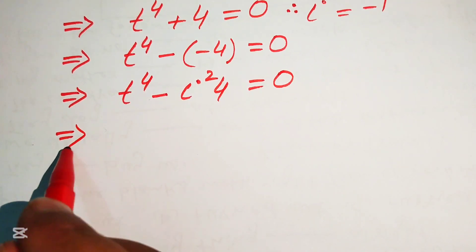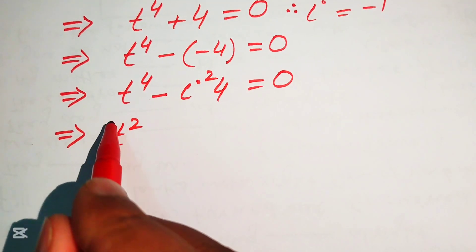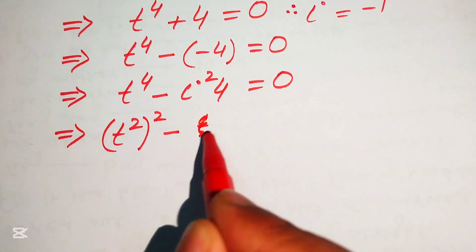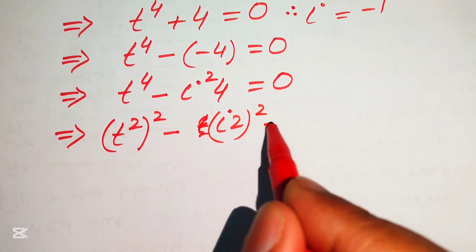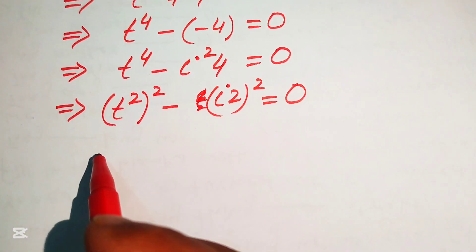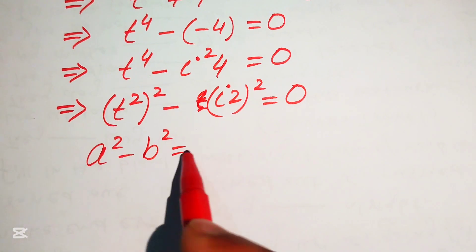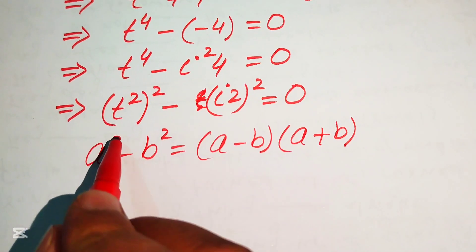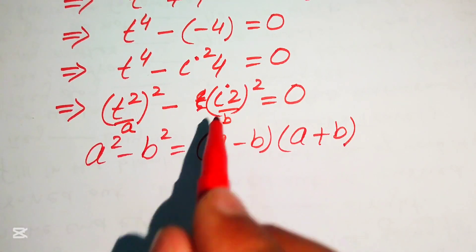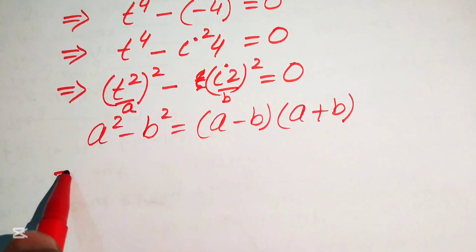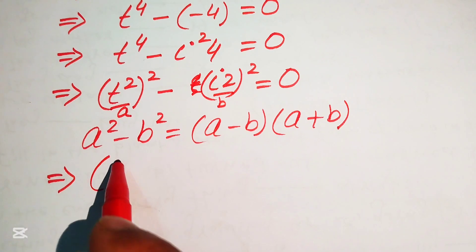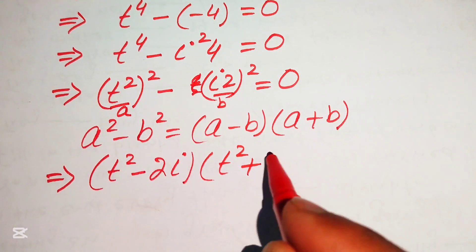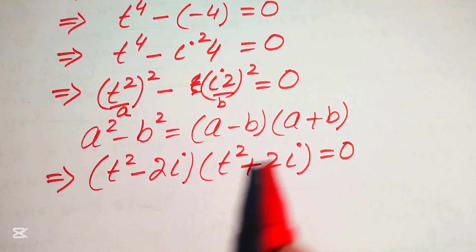We simplify further by writing t to the power of 4 as (t²)² and rewriting i²·4 as (2i)², giving us (t²)² minus (2i)² equals 0. We then apply the algebraic identity a² minus b² equals (a minus b)(a plus b), where a equals t² and b equals 2i, to factor the expression as (t² minus 2i)(t² plus 2i) equals 0.